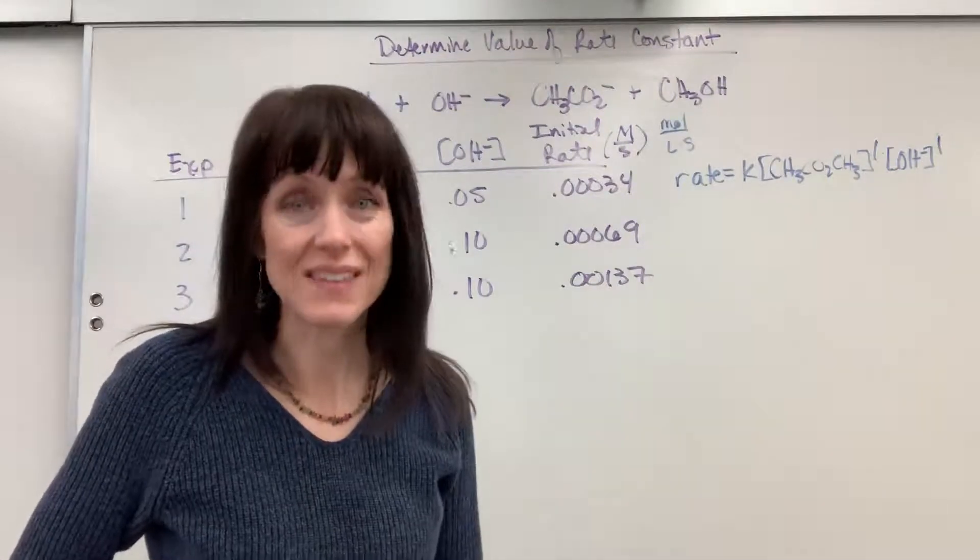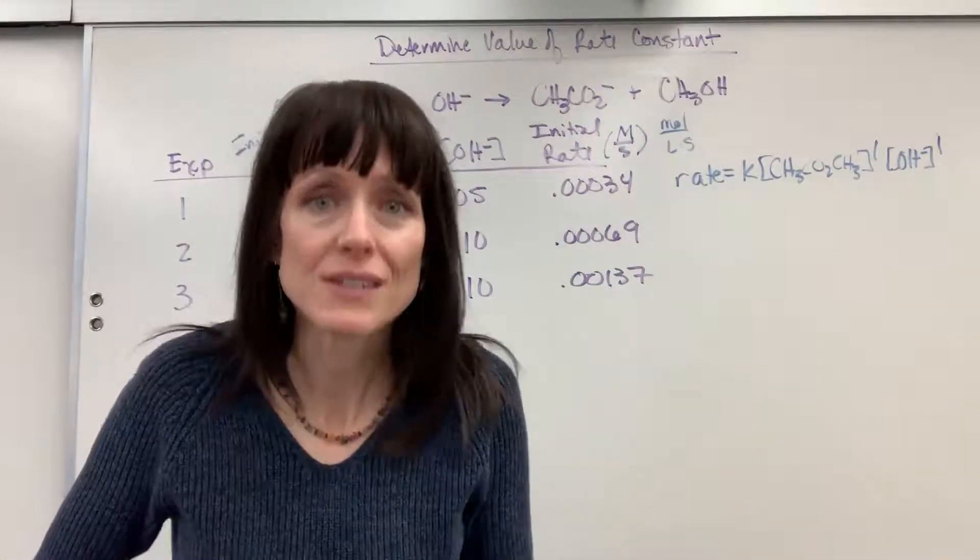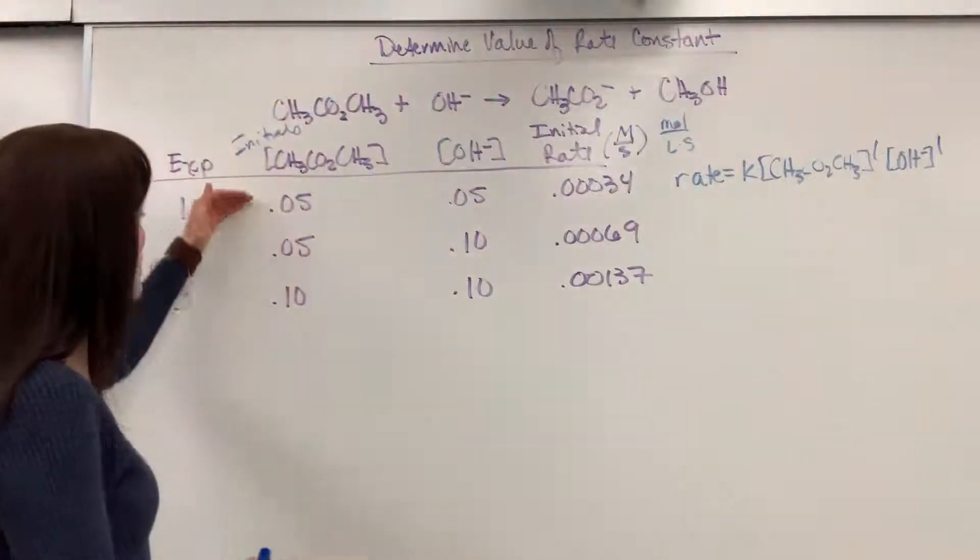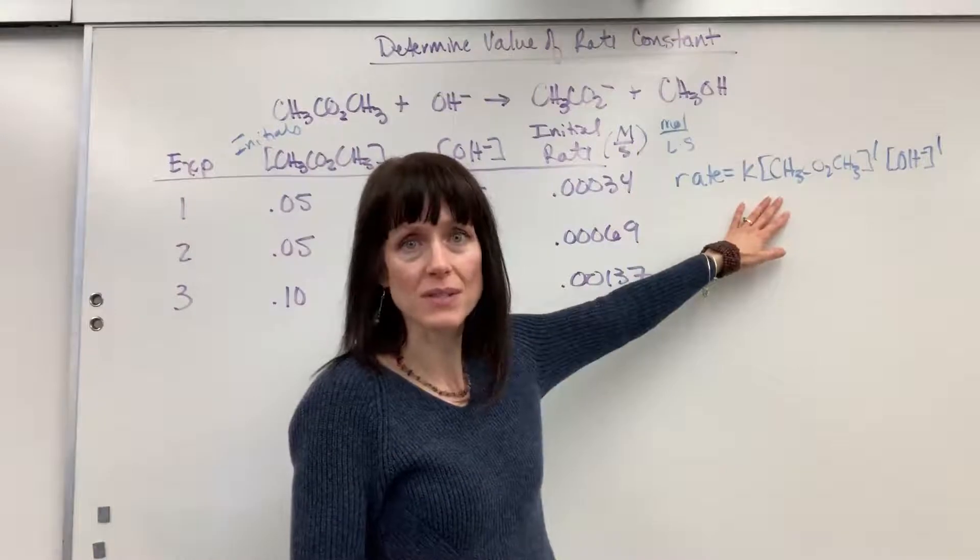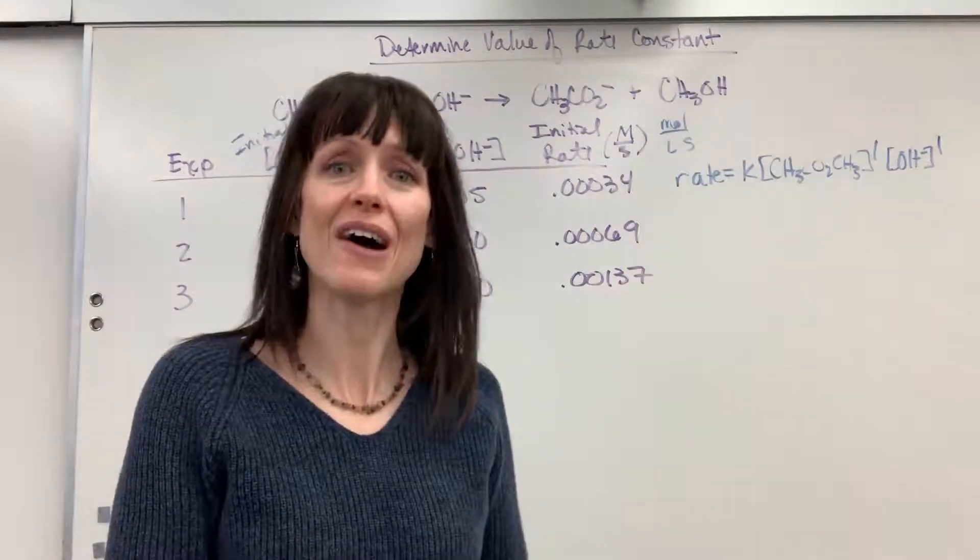So this is easy. At this point it is really easy. Here's what you do. Pick any one of the trials and you simply substitute in the numbers because you only have one unknown.